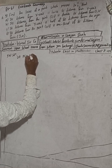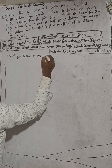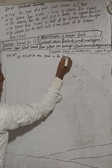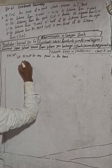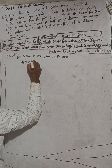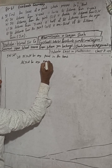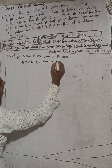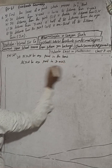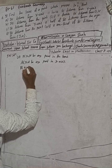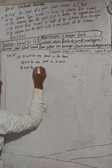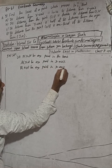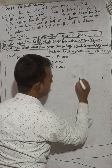Let P(x, y) be any point in the locus, and let A(x, 0) be any point on the x-axis, and B(0, y) be any point on the y-axis.